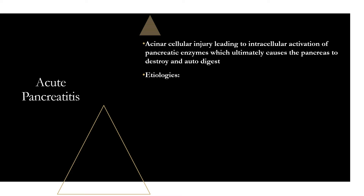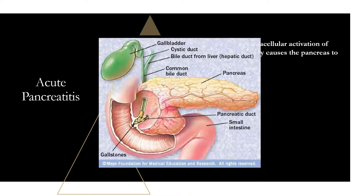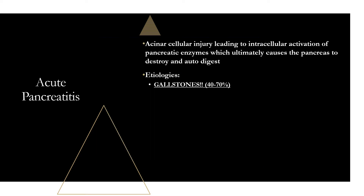The most common cause of acute pancreatitis by far is gallstones — 40% to 70% of cases, so definitely know this one. It's really important for real life and for the PANCE. What happens is gallstones come down the common bile duct, and where the pancreatic duct meets the common bile duct, a stone lodged there can cause bile to back up into the pancreatic duct, injuring the acinar cells and leading to autodigestion.